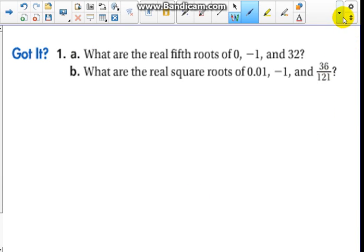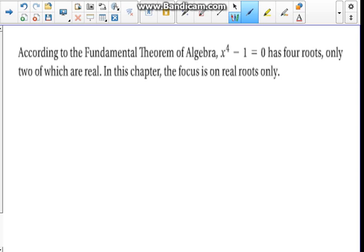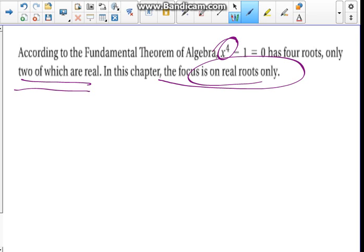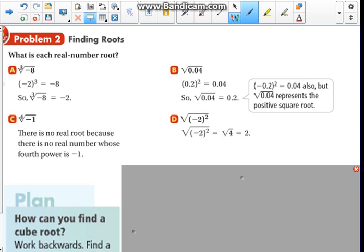Here's our got it to reinforce our understanding. Pause if you want to work this. According to the fundamental theorem of algebra, x to the fourth minus one equals zero has four roots, but only two of those are real. In this chapter, we're only going to focus on real roots only.